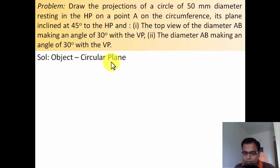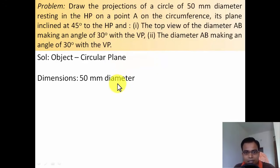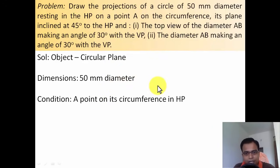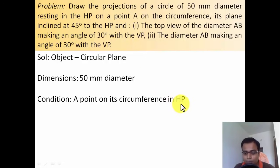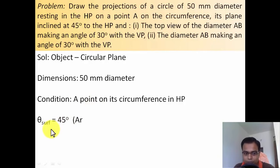The object is a circular plate or circular plane of negligible thickness. The condition is that amongst all the points on the circumference, there is one point — point A — which always remains in contact with the horizontal plane. The remaining points are up in the air, and the surface makes an angle of 45 degrees with the horizontal plane.